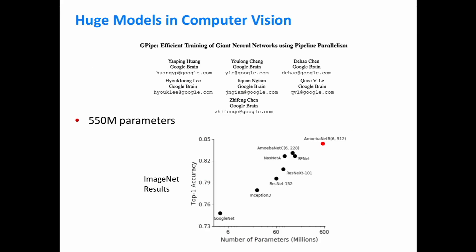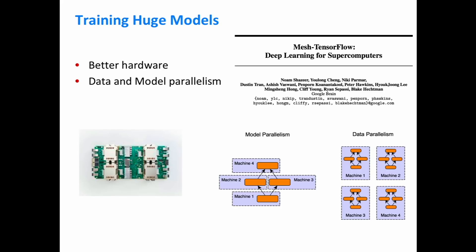We're also seeing really huge models being used for image recognition. Recent work by Google trained an ImageNet model with half a billion parameters — bigger than BERT but not as big as GPT-2. A plot shows log-scaled number of parameters on the x-axis and ImageNet accuracy on the y-axis — bigger models perform better, with a pretty consistent trend showing accuracy increasing with the log of model size.